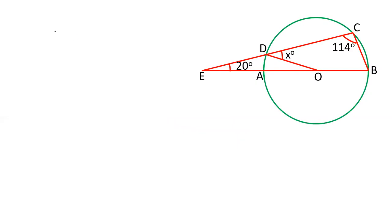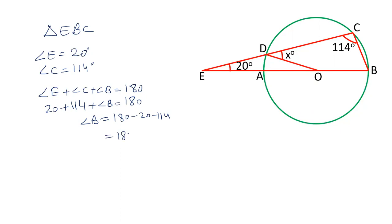First of all let us see triangle EBC. In this triangle, angle E is 20 degrees and angle C is 114 degrees. Therefore we can find the value of angle B. Angle E plus angle C plus angle B equals 180. So angle B equals 180 minus 20 minus 114, which is 180 minus 134. Therefore the value of angle B is 46 degrees.